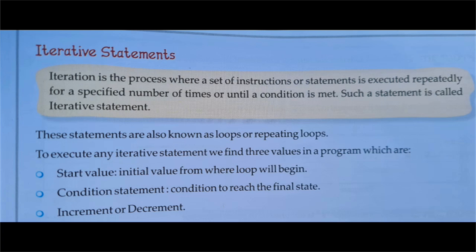Iteration is the process where a set of instructions or statements is executed repeatedly for a specified number of times, or until a condition is met. Such a statement is called an iterative statement. These statements are also known as loops or repeating loops. Jab tak condition true rehti hai tab tak ye statements execute hote hain; jaise condition false ho jati hai, loop terminate ho jata hai.